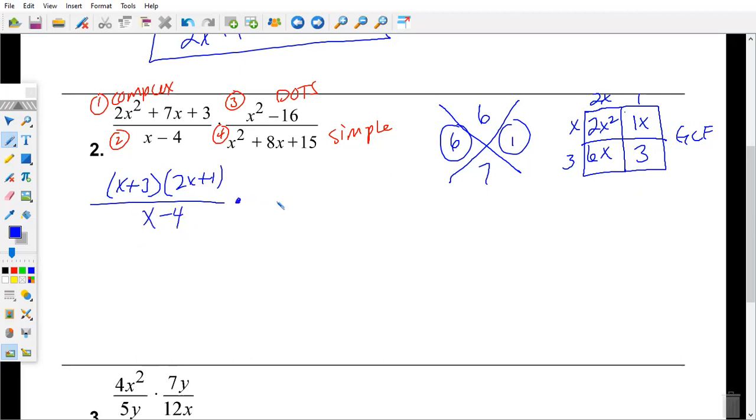On to expression three. What happens? Exactly. And why am I doing that? Difference of two squares. That's a perfect square, and that's a perfect square. Done. Perfect. Look at y'all. All right. Done.